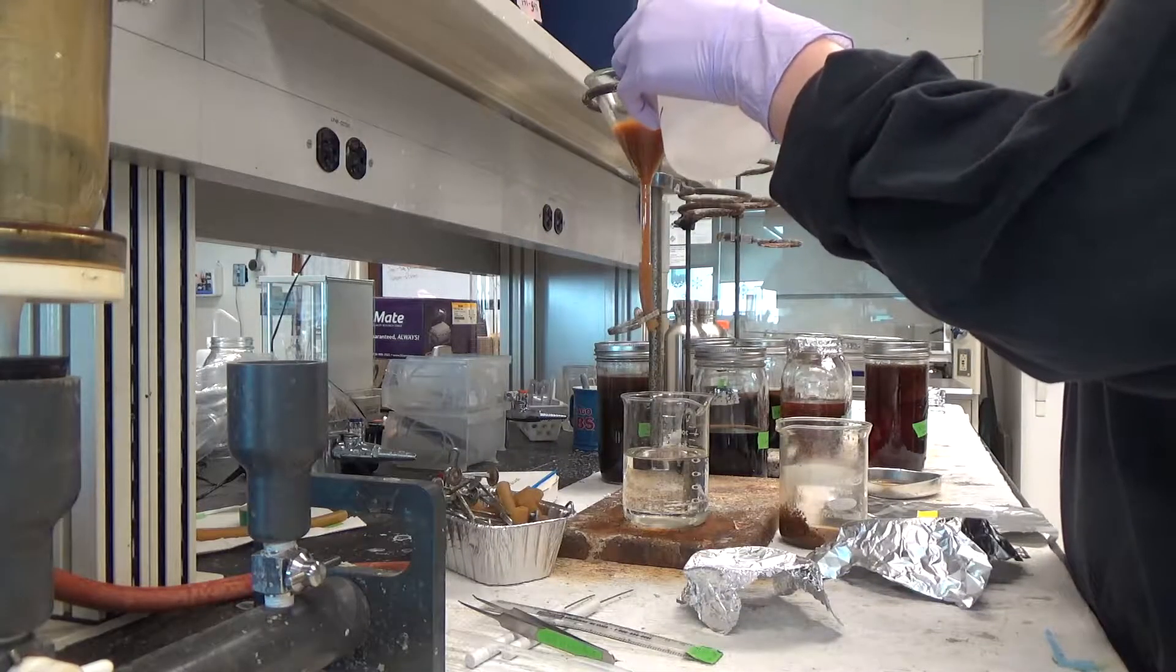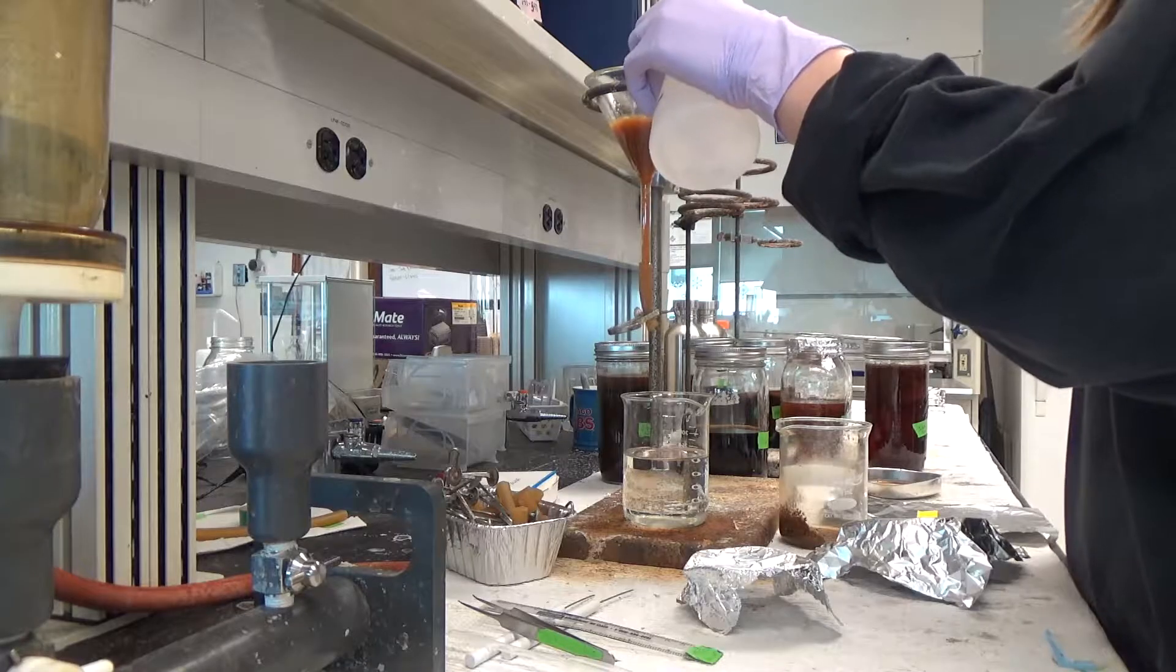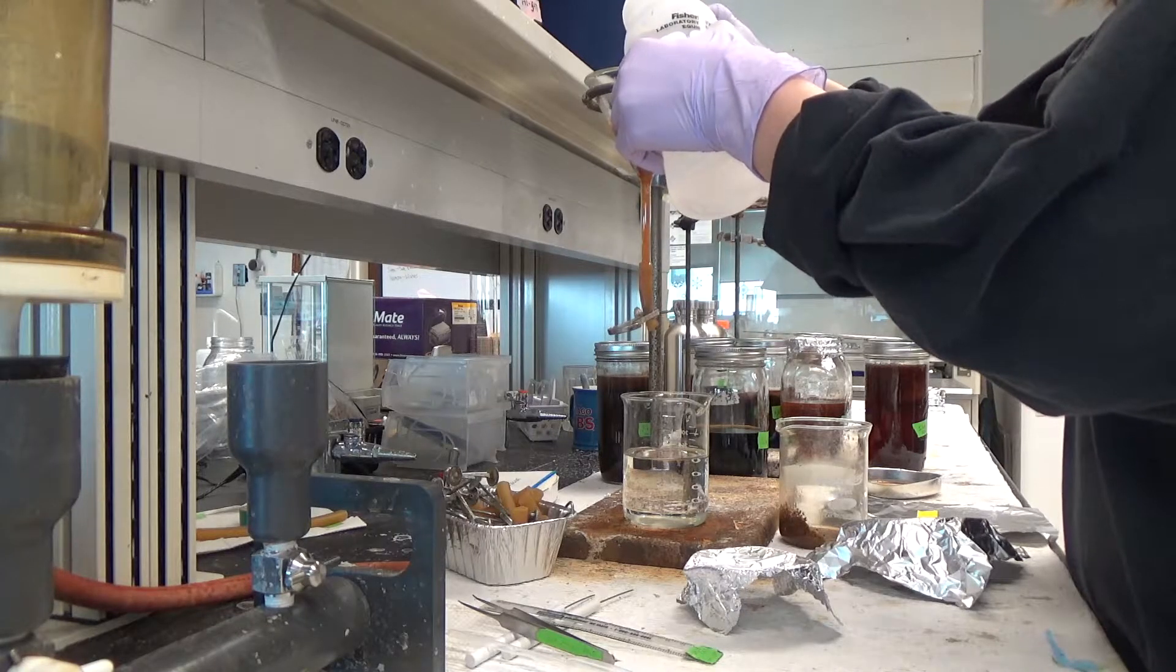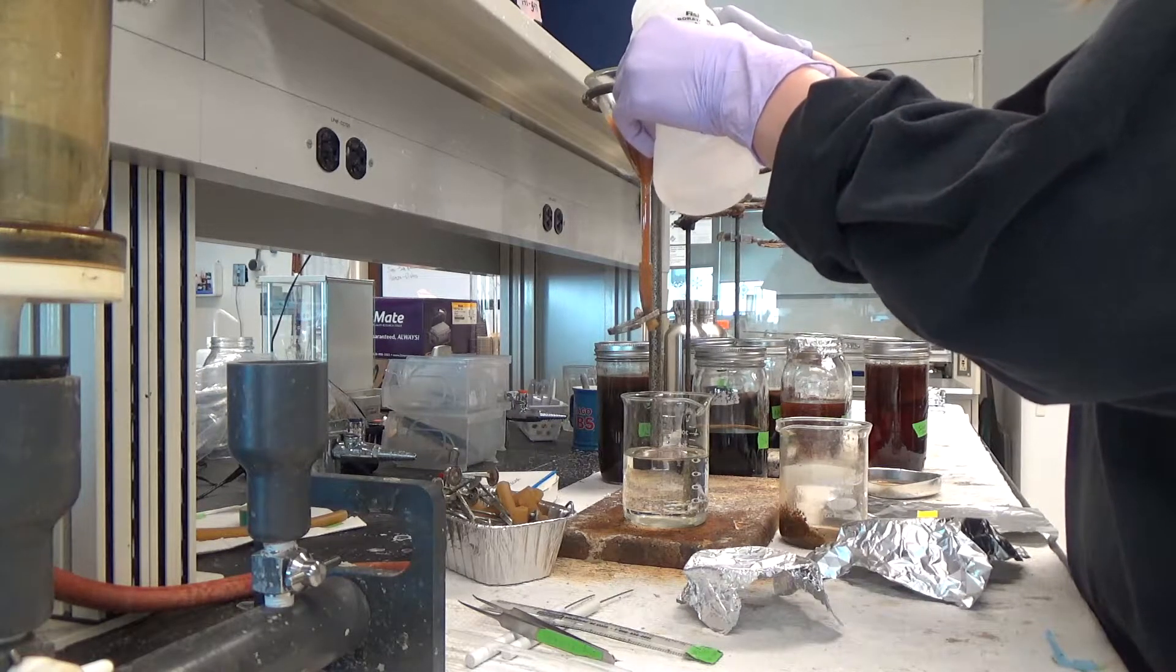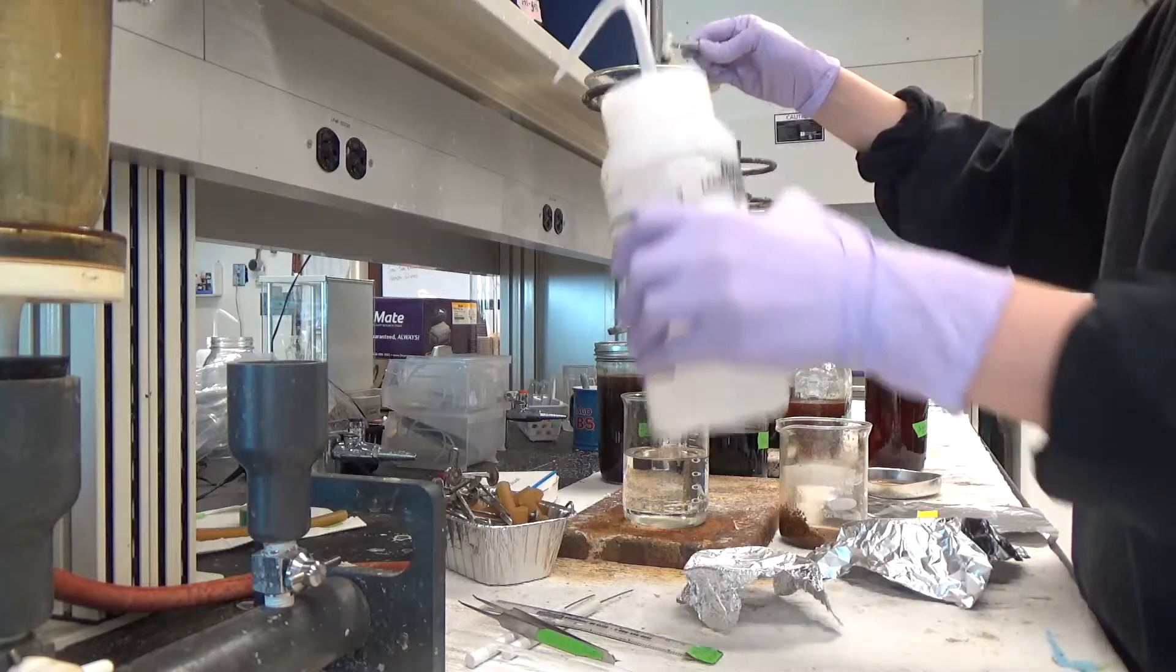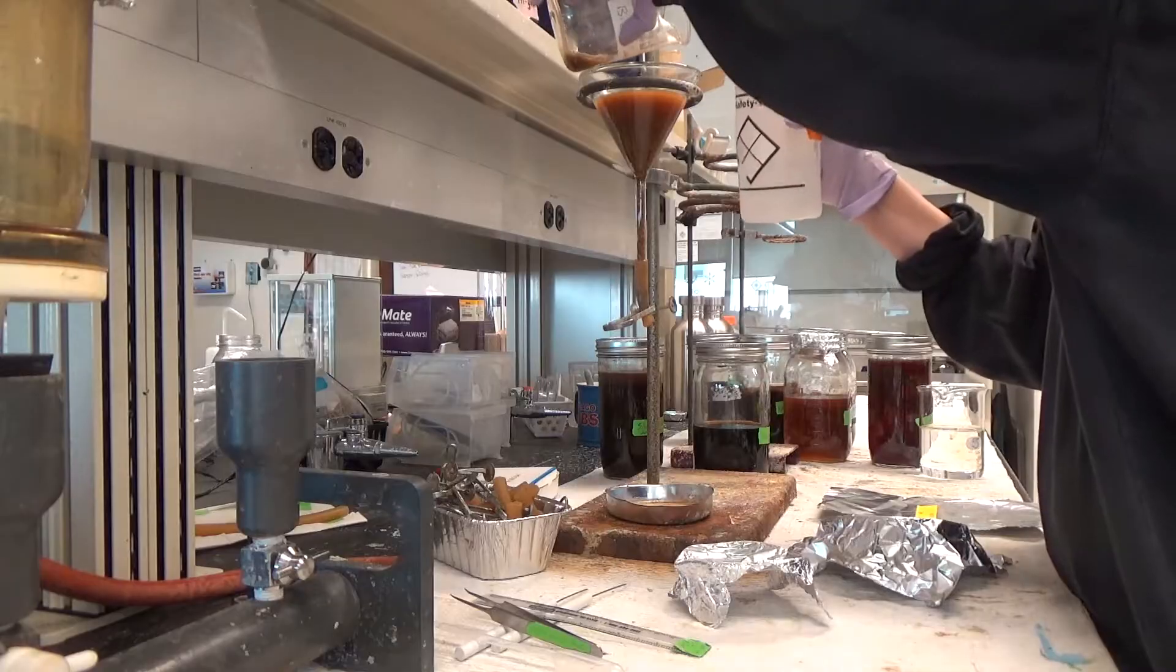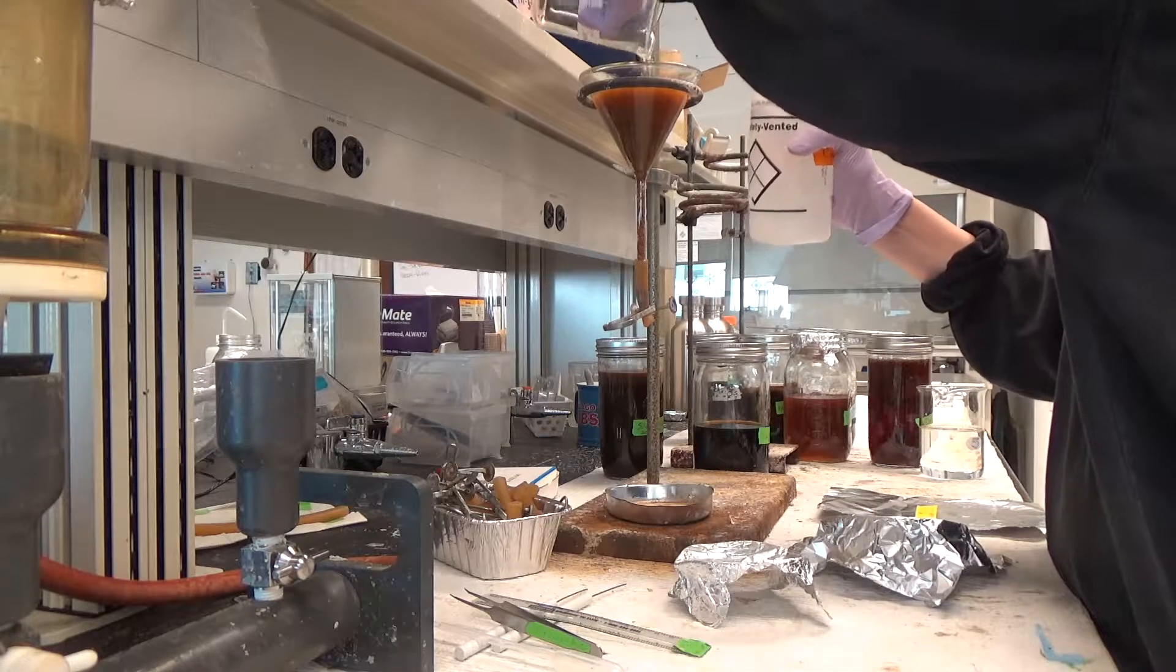Rinse the stir bar with the salt solution to ensure that all pieces of plastic that may have gotten stuck to it are now in the funnel. Rinse your beaker with the salt solution as well to ensure that all plastic that may have gotten stuck to the sides makes it into the funnel.